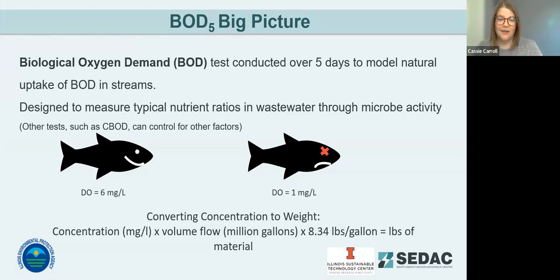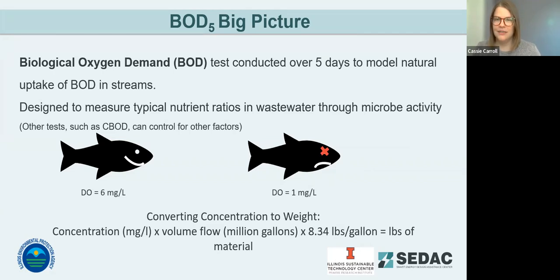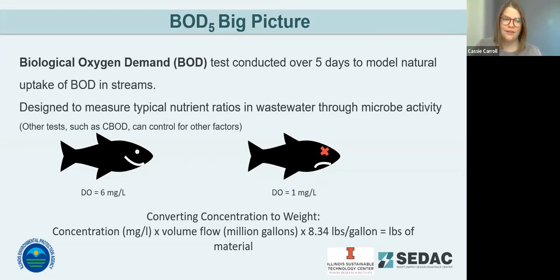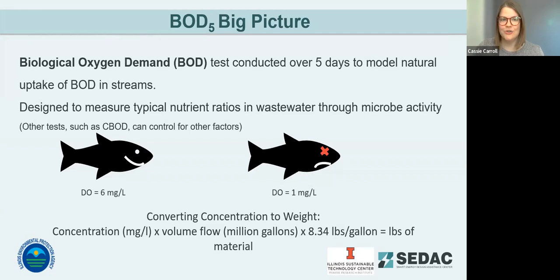Our goal is to get rid of the BOD so it doesn't end up in our natural waterways and deplete oxygen, possibly killing organisms. From the illustration, when the DO level is at six milligrams per liter, we have a happy fish. However, when the DO level drops to one milligram per liter, the fish isn't very happy. While nature has natural methods of dealing with BOD, we don't want to release nutrients uncontrolled into waterways. Working to achieve zero BOD is not cost effective and would lead to extremely high utility consumption.